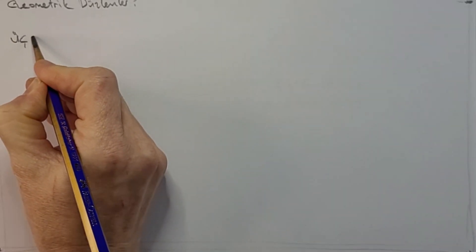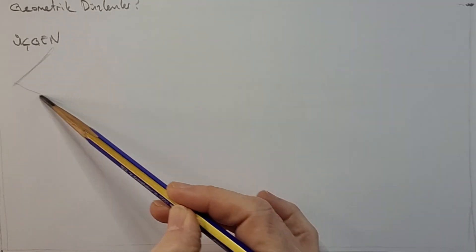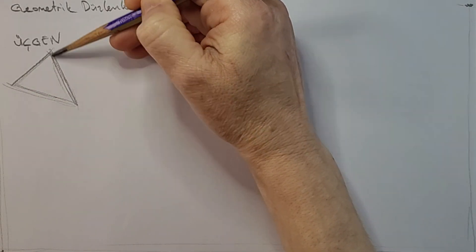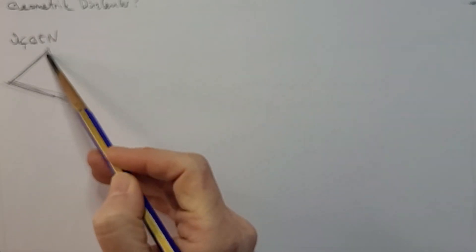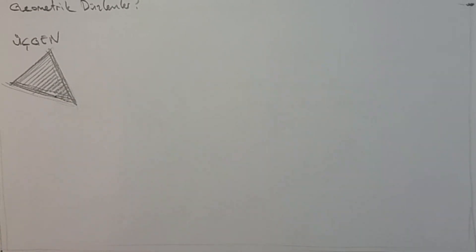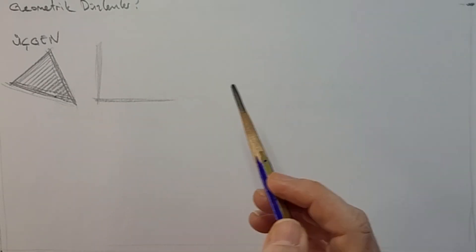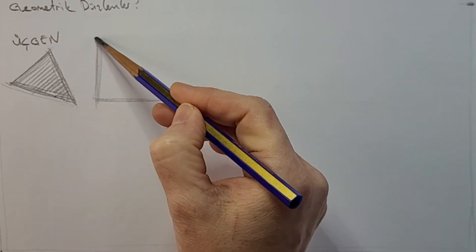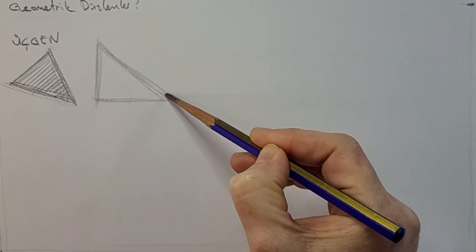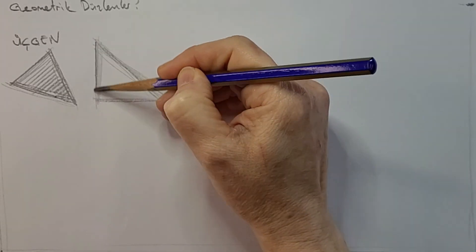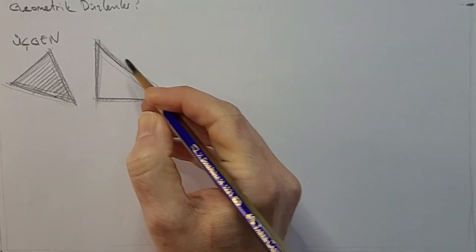Geometrik düzlemler neler acaba? Bir bakalım. Birincisi üçgen. Bu gördüğümüz bir üçgen — üçgen bir düzlem. Bir tane de dik kenar üçgen, bir tane de dikken üçgen.